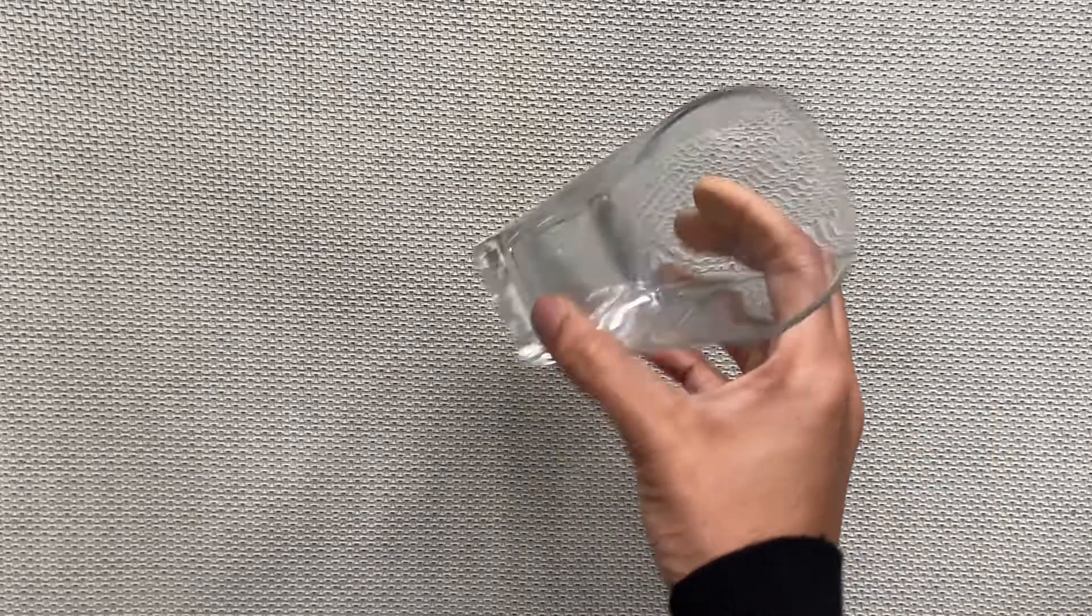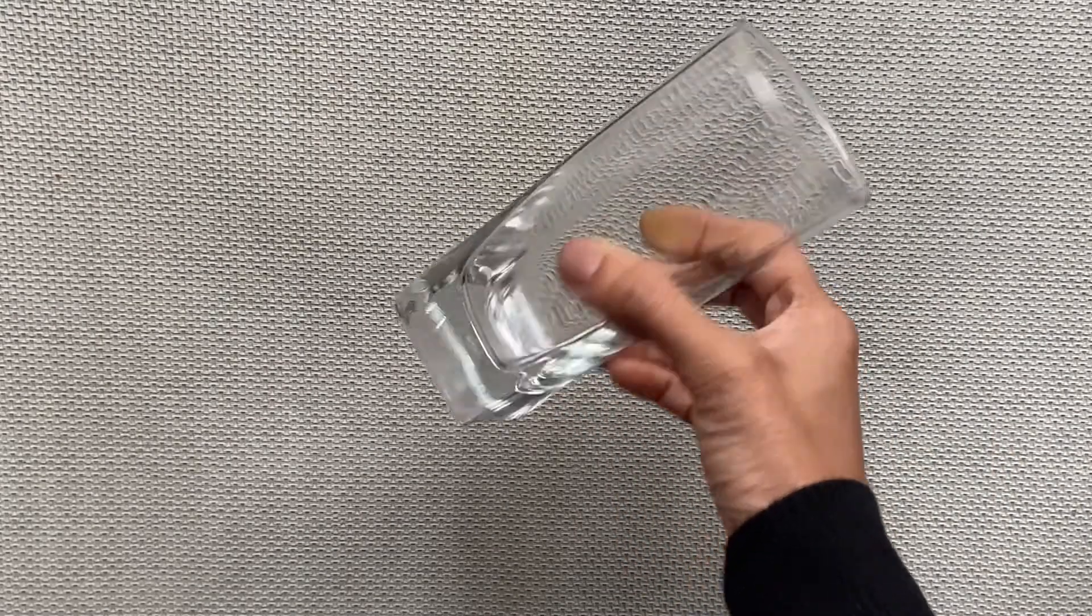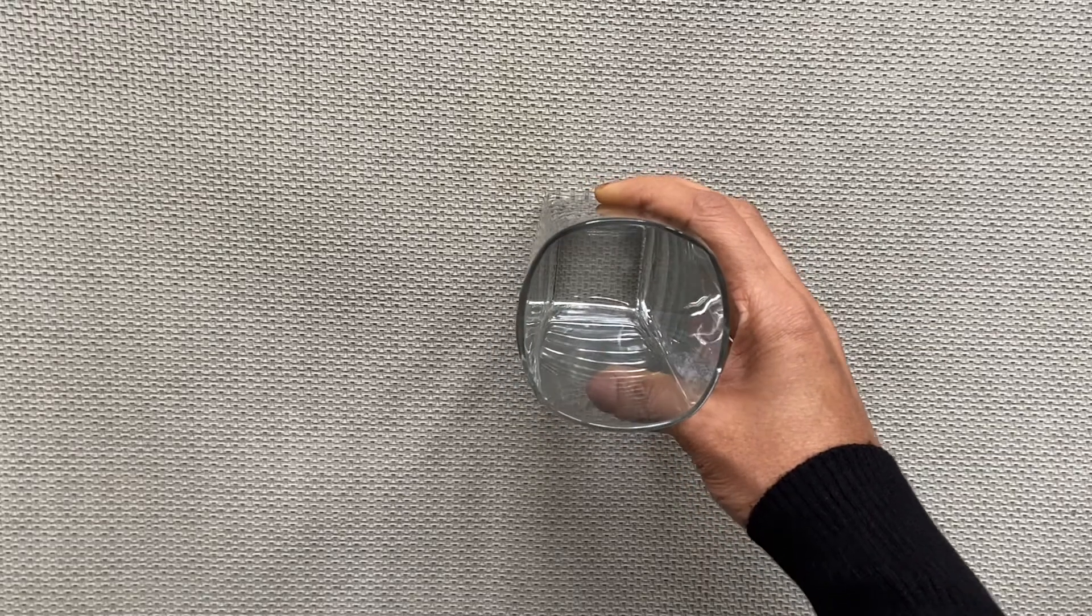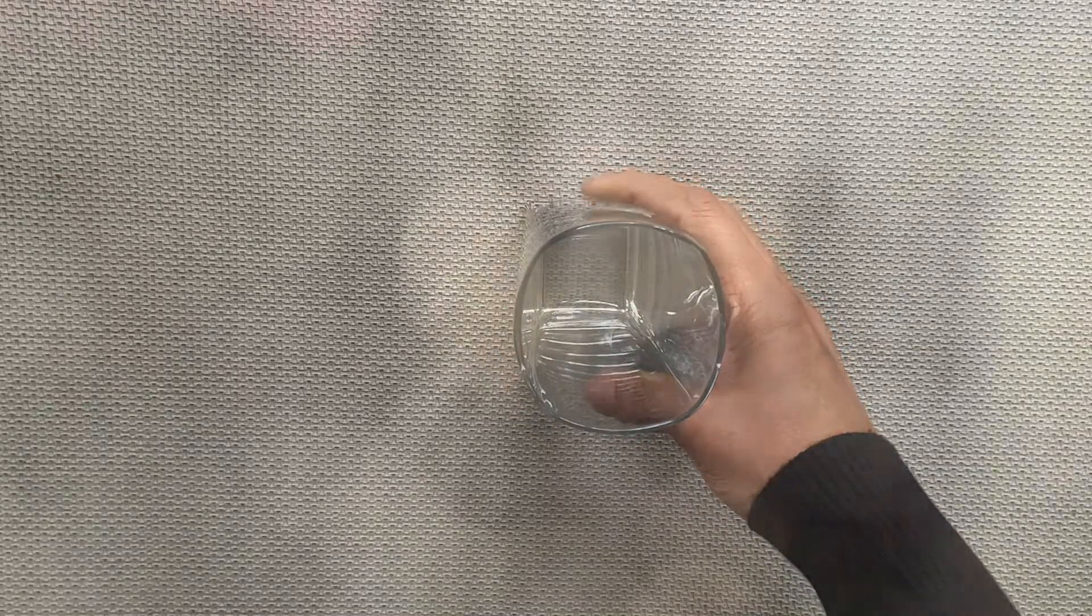For this experiment you need a glass. It is best to have a clear glass so that kids can see what is happening inside. Then a piece of cardboard and a coin.